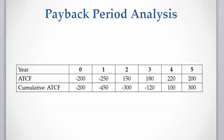In this row I have calculated the cumulative cash flow. For year zero, or the present time, the cumulative cash flow equals the capital cost at present time. For year one, the cumulative cash flow is the cumulative cash flow of the previous year plus the cash flow at year one, and this summation is going to be negative $450.